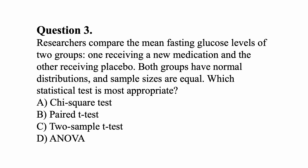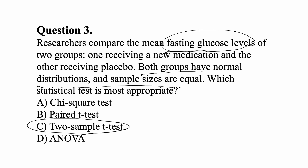Question three: Researchers compare the mean fasting glucose levels of two groups — one receiving a new medication and the other receiving a placebo. Both groups have normal distributions and equal sample sizes. Which statistical test is most appropriate? You have two separate groups with continuous variables — mean fasting glucose levels. The correct statistical test would be a two-sample t-test, because you're comparing the means of two independent groups.